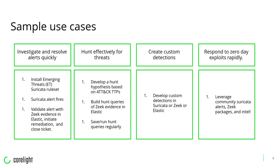Threat hunting is also a big use case. Once you can holistically monitor your network, all it takes is one person with time and interest to start threat hunting through the data in a SIEM like Elastic. You can take a hypothesis — for example, is someone abusing my DNS traffic to exfiltrate data — and answer that question by querying for DNS queries that are extra long, say beyond 25 characters, as potential evidence of data exfiltration via outbound DNS queries.